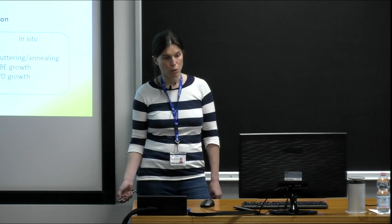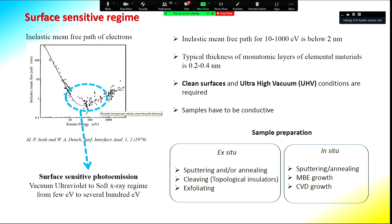For photoemission, samples also need to be conductive. Samples can be prepared ex-situ — for example, bulk crystals of topological materials can be cleaved in vacuum to get a clean surface, or graphene samples can be exfoliated. Samples can also be prepared in-situ: topological insulators can be grown by MBE growth, graphene can be prepared by chemical vapor deposition, and clean surfaces can be prepared by sputtering and annealing techniques.